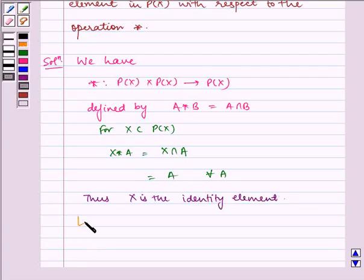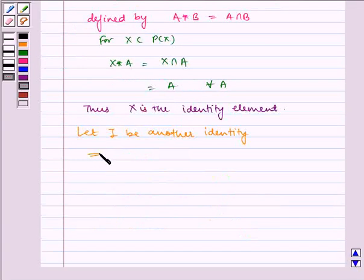Now let I be another identity, which implies I ∩ A = A for all A.